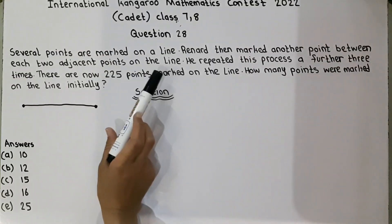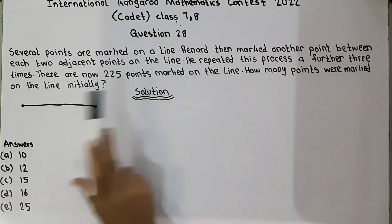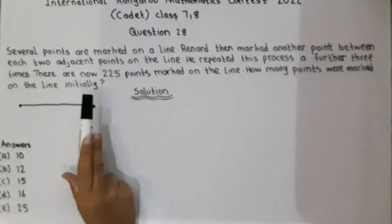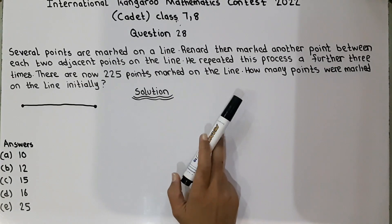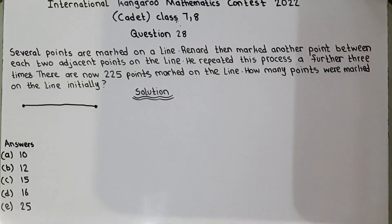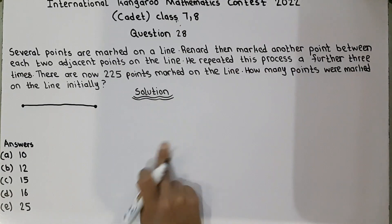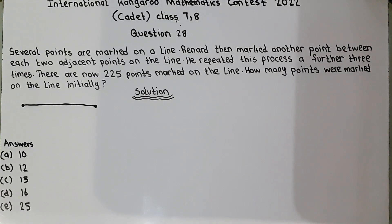Several points are marked on a line. Reynard then marked another point between each two adjacent points on the line. He repeated this process a further three times. There are now 225 points marked on the line. How many points were marked on the line initially? So they are saying that Reynard marked a point between each two adjacent points — meaning next to next — and after repeating this process a further three times, there are now 225 points. They are asking how many points were marked initially.